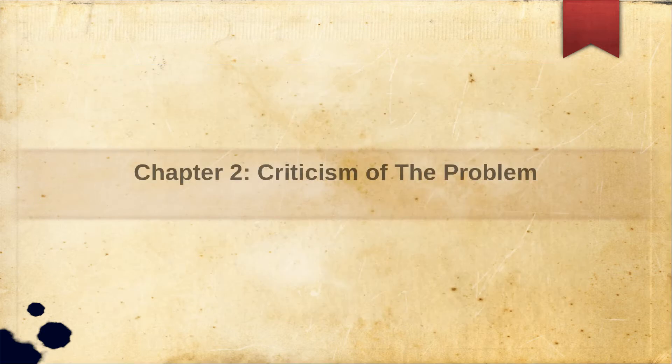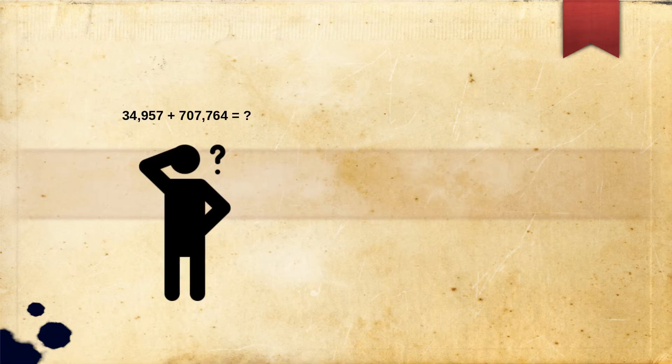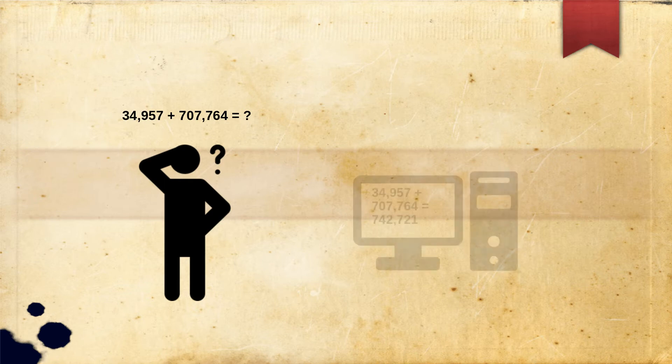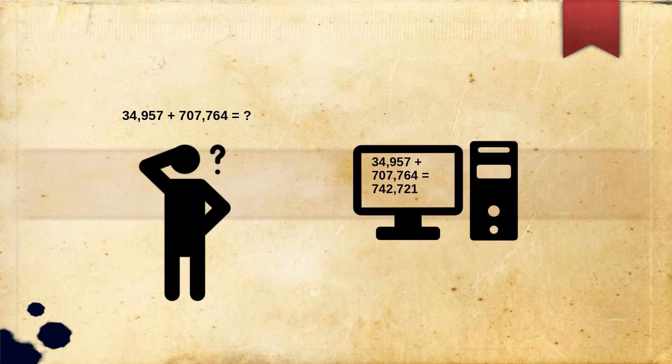Chapter 2: Criticism of the Problem. This chapter is a criticism of the game. If you were to ask a human to add 34,957 to 707,764, they wouldn't be able to answer instantly, whereas in the game it would be obvious which player is the computer because of the speed of their response. Turing addresses this and says if you programmed a 30-second delay, the players would remain indistinguishable.